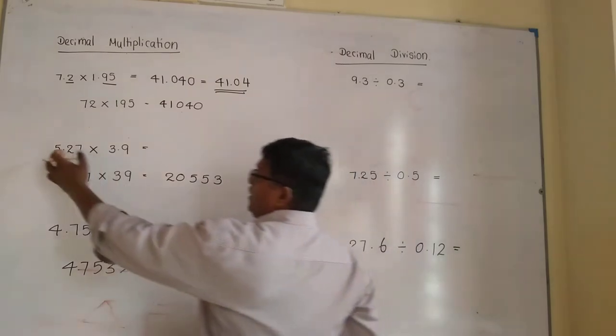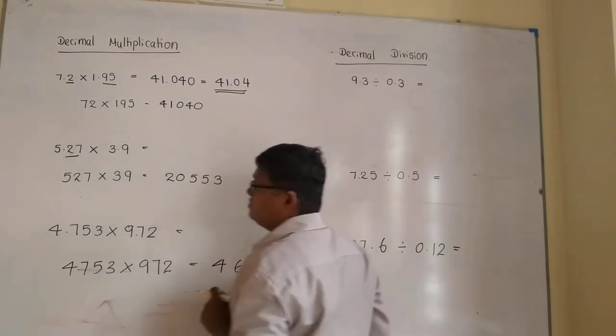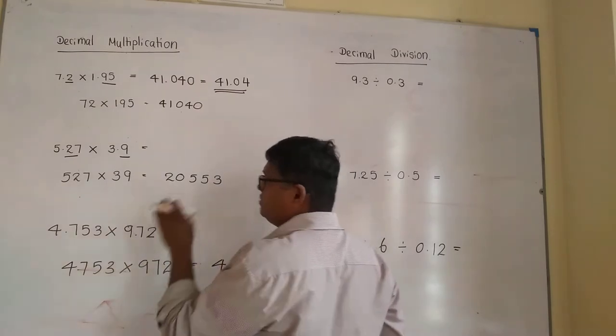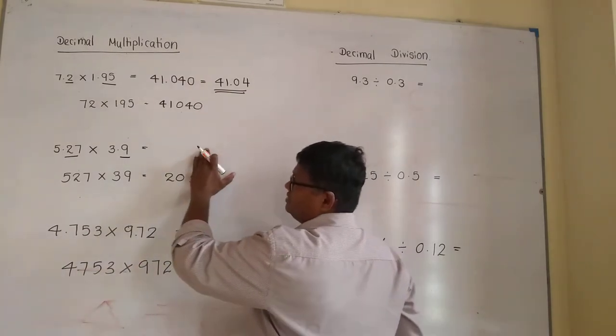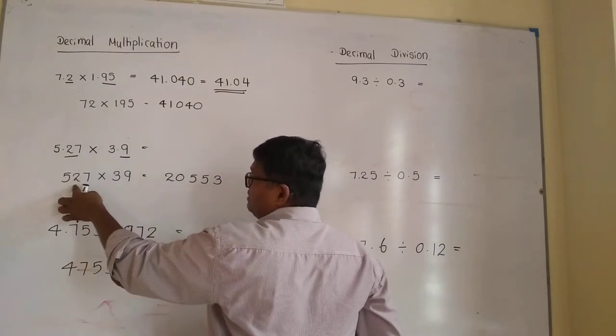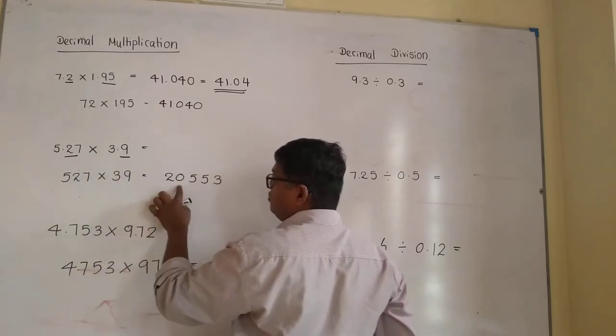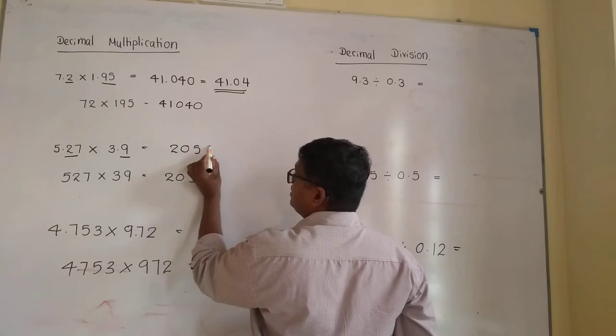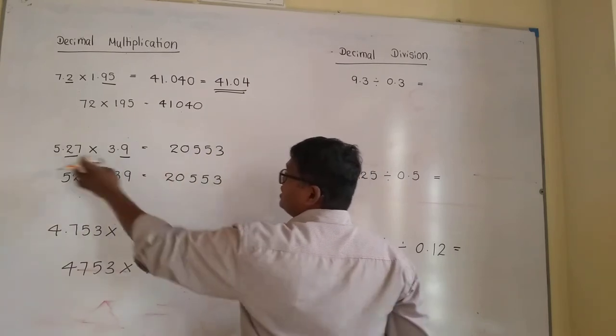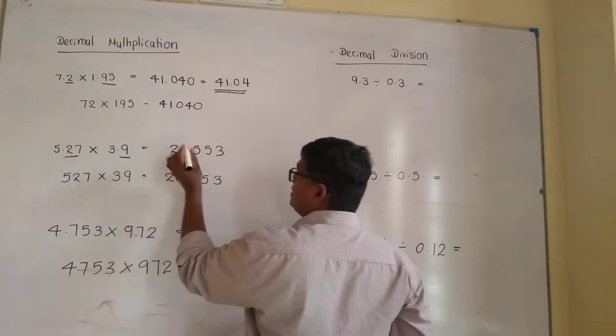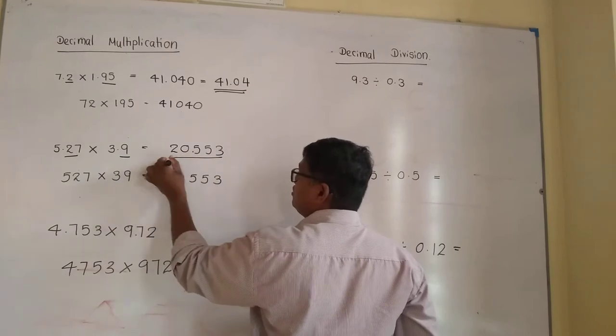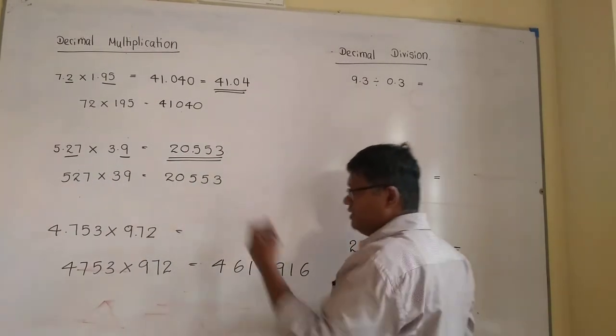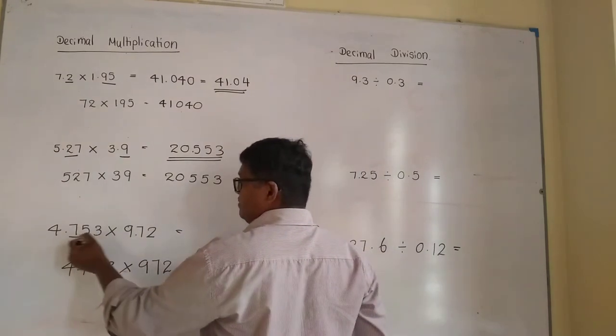This one: 5.27 has two decimal places, and 3.9 has one decimal place. Altogether, there should be three decimal places in the answer. Now, 527 multiplied by 39 gives 20,553. Leave three decimal places: 20.553. You get this number with three decimal places.